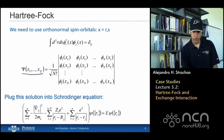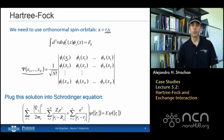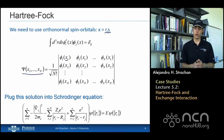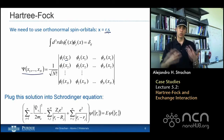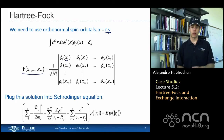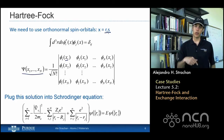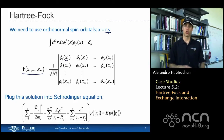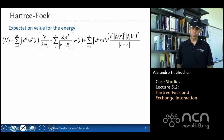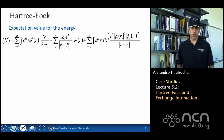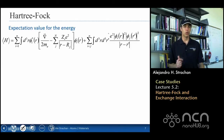For Hartree-Fock theory, we form the multi-electron wave function as a Slater determinant instead of a simple product of single-particle wave functions. I'm going to use the letter x to denote both spin and position — the full description of an electron's state includes both its position and its spin. So I group these two variables as x, and plug the Slater determinant into the Schrödinger equation with the Born-Oppenheimer Hamiltonian.